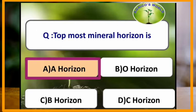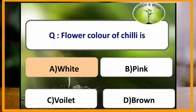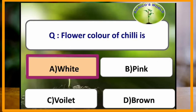Topmost mineral horizon is the A horizon. The O horizon is present in arable lands and is the topmost horizon in arable lands. Flower color of chili is white.